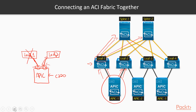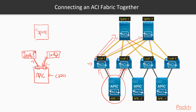Now you know how to connect the APIC. Those ports are connected into member ports or end host ports on the leaves - we don't use the far-right uplink ports for the APIC. We just use a member port as if connecting any other server to the leaf. The spine switches use those far-right uplink ports - one uplink to spine one and another uplink to spine two.